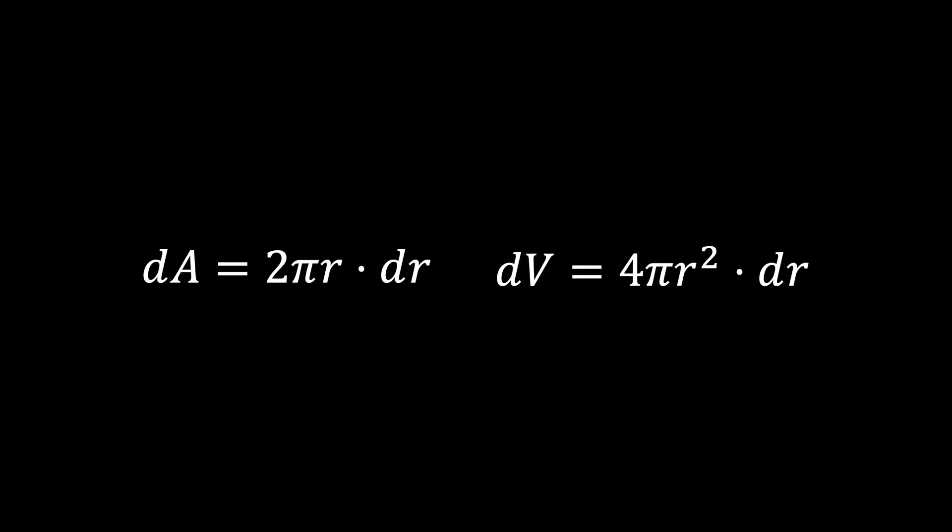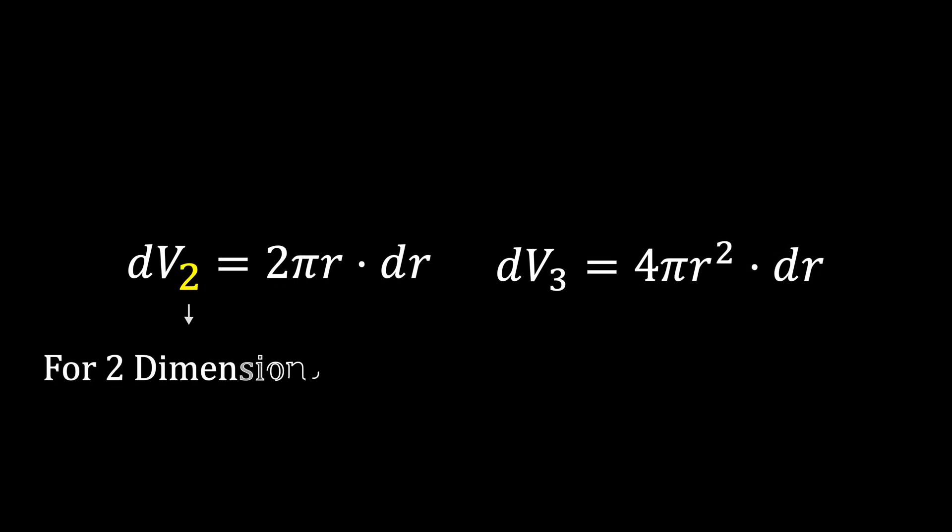Now that we understand how to find the volume of sphere in 2D or 3D cases, let's introduce some notation to generalize this further to n dimensions. In 2D, the area of a ring is dA, which I will now call dV₂ where the subscript 2 represents the 2D space. Similarly in 3D, the volume of the spherical shell is dV₃ where 3 represents 3D space. Now notice an interesting thing here.